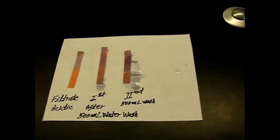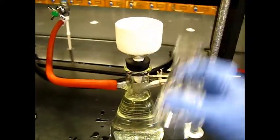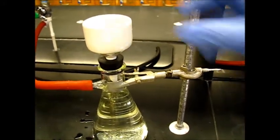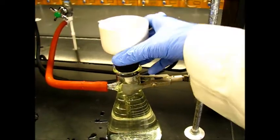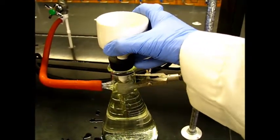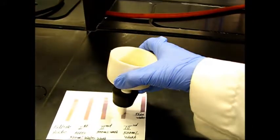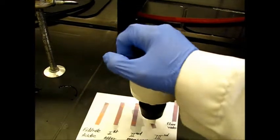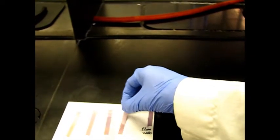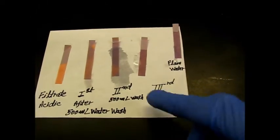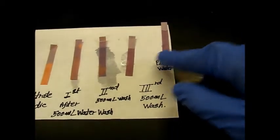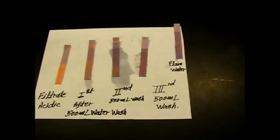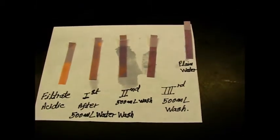This is the third and final wash, so basically right now we have 1.5 liters of wash. Let's check the pH now. This is from the third wash, and if we compare all three washes with this plain water pH, this is very close to the plain water. Now it's time to recrystallization.